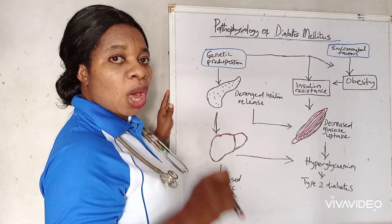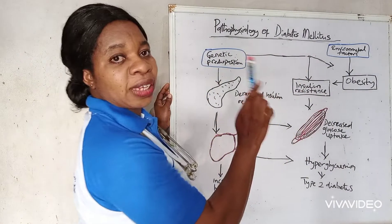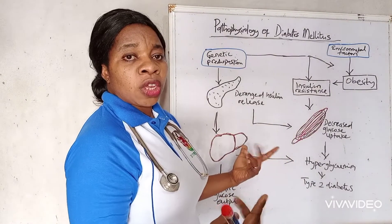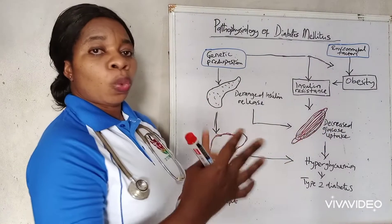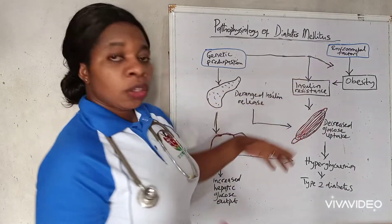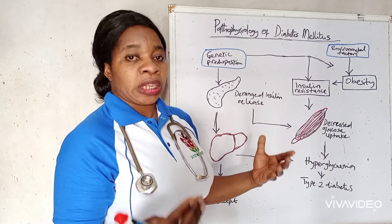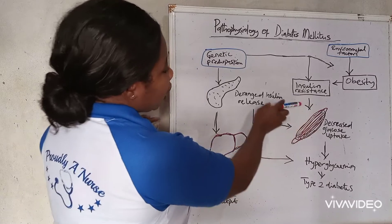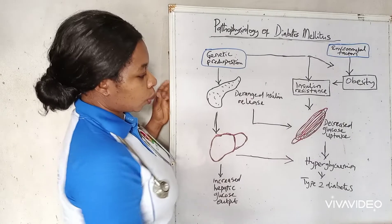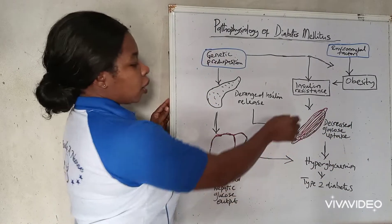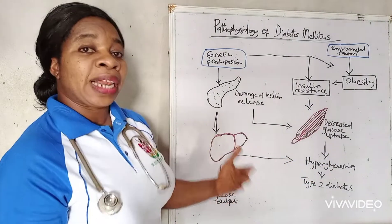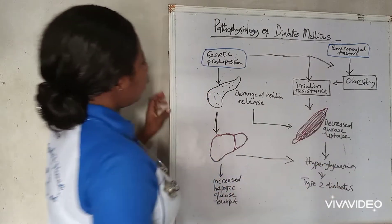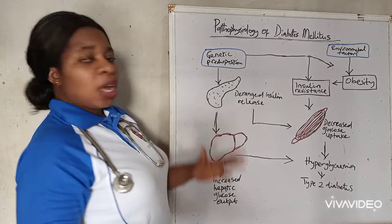That is why we need to reduce our weight so we do not have insulin resistance. Insulin resistance affects the muscles — the cells in the muscles need glucose to function properly. Insulin breaks down the glucose we eat in our food to make it easier for the cells to absorb. When there is insulin resistance, the cells cannot get glucose, leading to decreased glucose intake, which can lead to hyperglycemia — that is, high blood glucose level. This is what happens in type 2 diabetes.